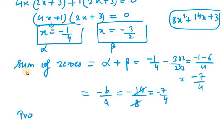Now, we need to find product of zeros, that is alpha dot beta. Alpha dot beta is minus 1 over 4 into minus 3 over 2.